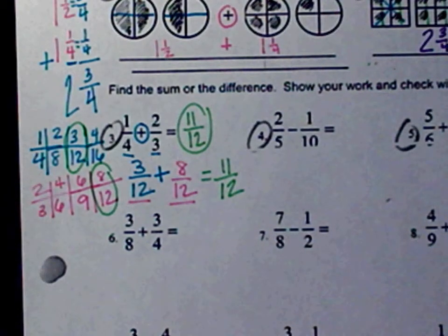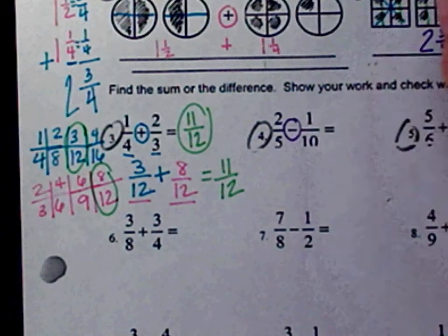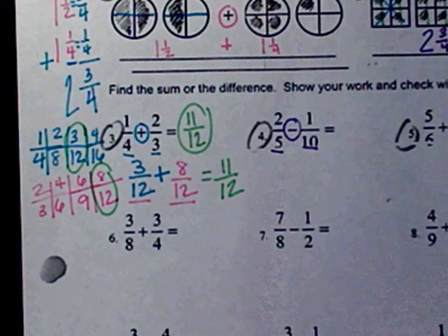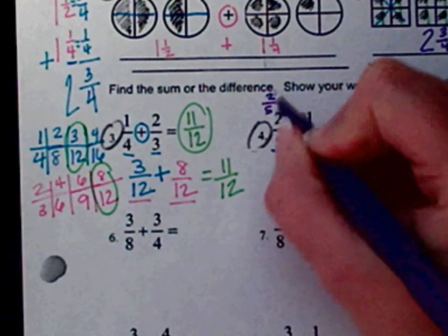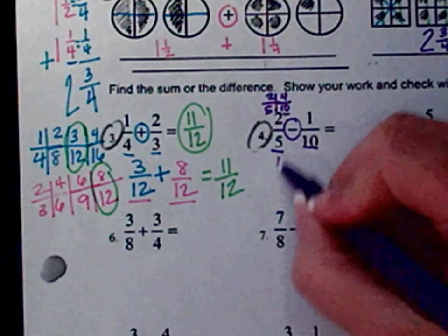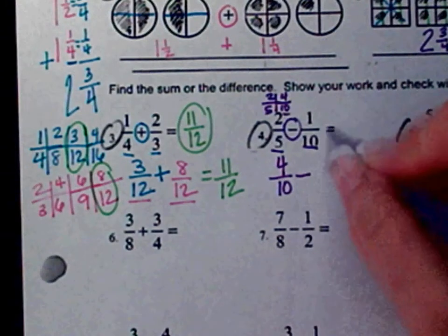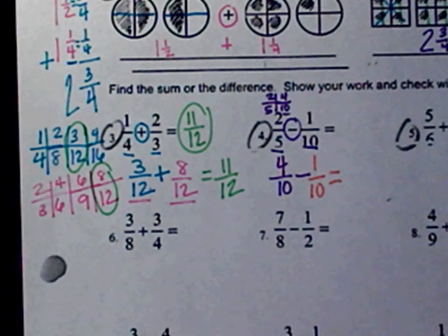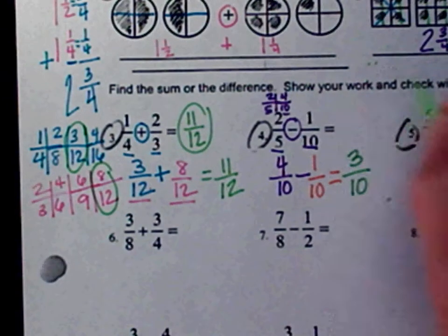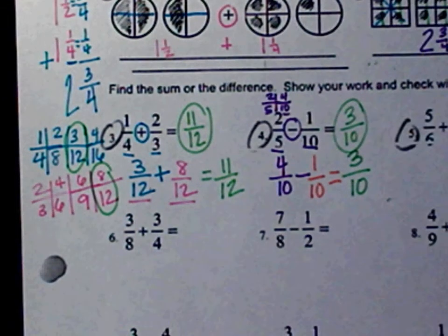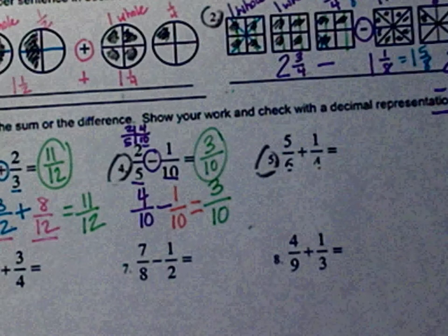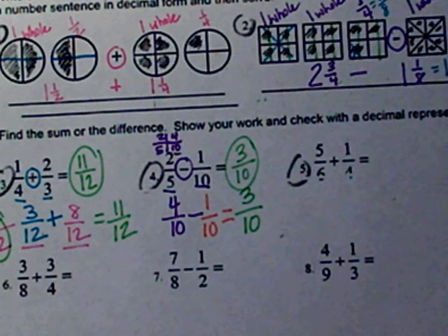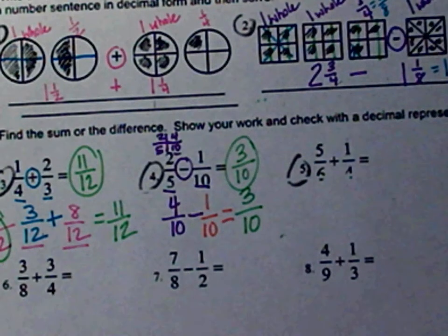For number four, we have two-fifths and we are subtracting one-tenth. Look at the denominators — are they the same? No. So we do an EFT. For two-fifths, right away I find a common, so I rewrite two-fifths as four-tenths minus one-tenth, because one-tenth is already in tenths. Four minus one is three; the denominator stays the same. Three-tenths is my answer.